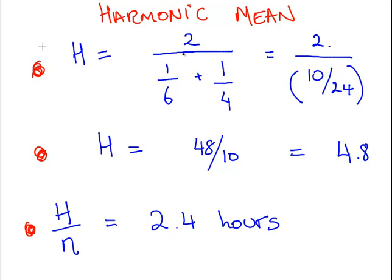Here I've just done it out. H equals 2. The first machine was going to do it in 6 hours. The second machine could do it in 4 hours. So working that out, we get a harmonic mean of 48 over 10, 4.8.